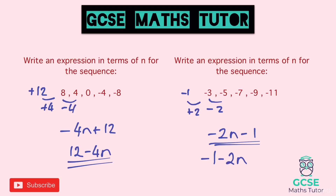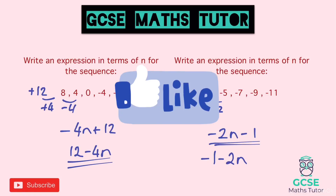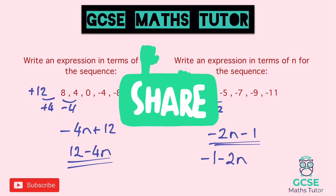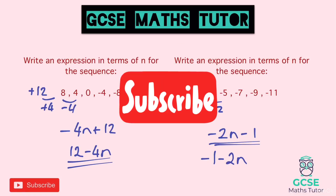And that's all the questions — that's writing the nth term of a linear sequence when it's going up and down. Hopefully you found that useful. If it was helpful, please like, comment, subscribe, and I'll see you for the next one.